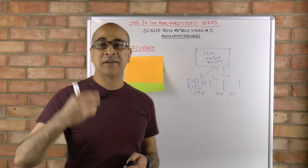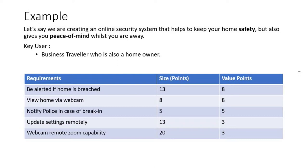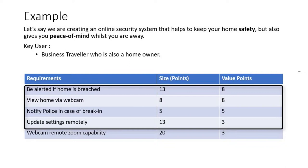If you look on your screen, you can see an example here - we've got an online security system that we're building, and one of our key users and target markets are business travelers who are homeowners and want to make sure their homes are secure whilst they're away. On the left-hand side you've got a bunch of requirements and associated with them are value points. Let's say we deliver the first four requirements, which gives us a total of 24 value points.